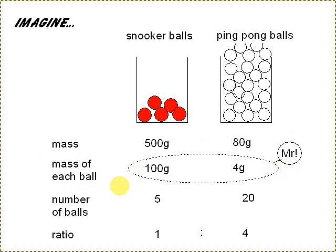In this case, we're talking about mass of each ball, so we would say in this case, you would have 5 snooker balls. Here, because you've got 80 grams of ping pong balls with 4 grams each, that will be 20 balls, which gives a ratio of 1 to 4, which is obviously a different way around in terms of the mass.